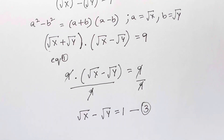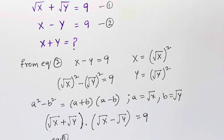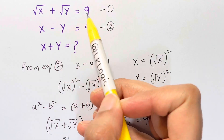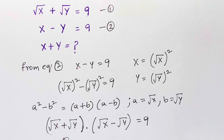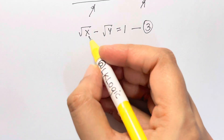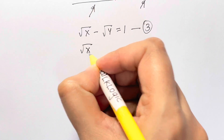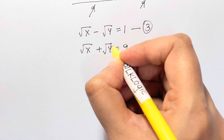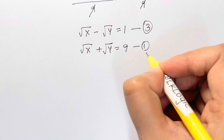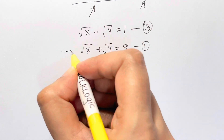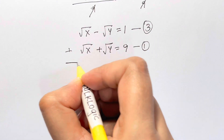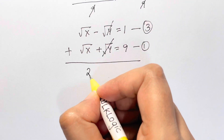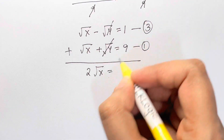Now we have equation 1: square root of x plus square root of y equals 9, and equation 3: square root of x minus square root of y equals 1. Adding both equations, the square root of y terms cancel, giving 2 times square root of x equals 9 plus 1, which is 10.